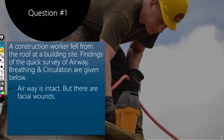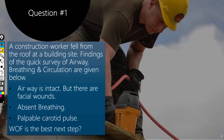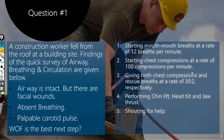The airway is intact but there are facial wounds, absent breathing, and finally the carotid pulse is palpable. The question is which of the following is the best next step? Five stems are given. You can pause the video here, try to figure out the answer by yourself, and then when you are ready you can continue the video.